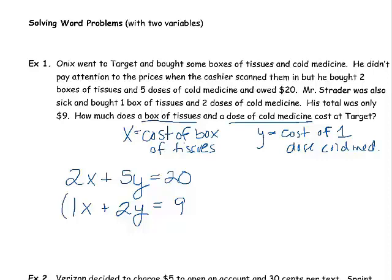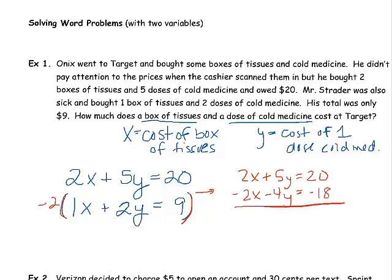I think I'm going to multiply this one by negative two. That gets me 2X plus 5Y equals 20. This gets me negative 2X minus 4Y equals negative 18. My X's cancel, I get Y equals 2. So what does Y stand for? It stands for the cost of cold medicine. And that's just for one dose. So we know that this is going to be two dollars.